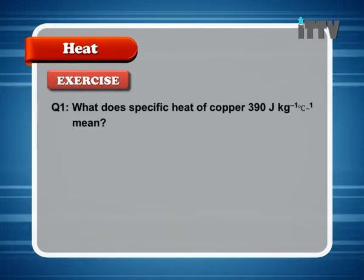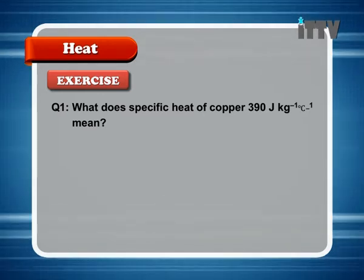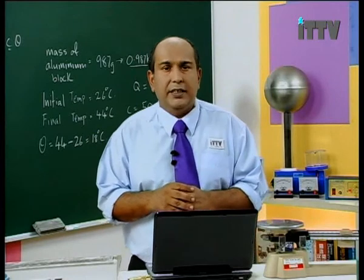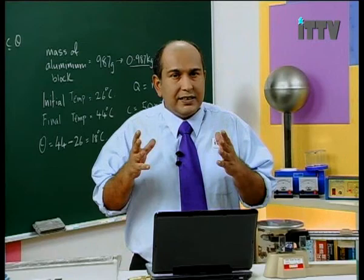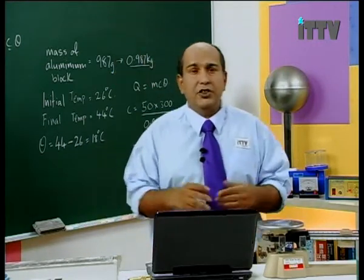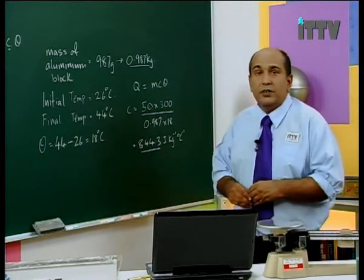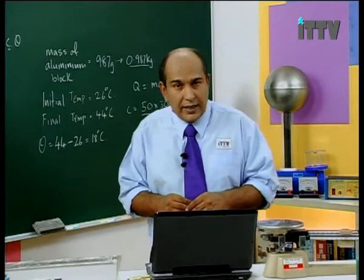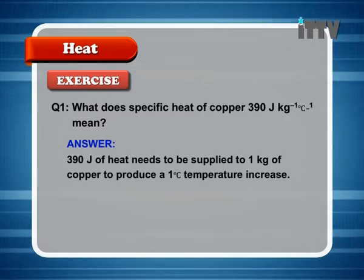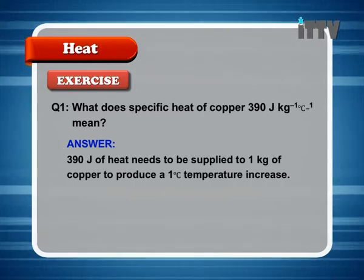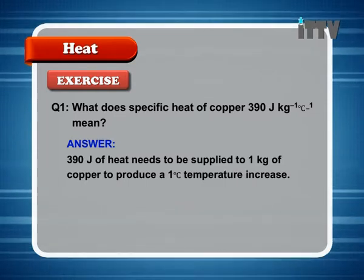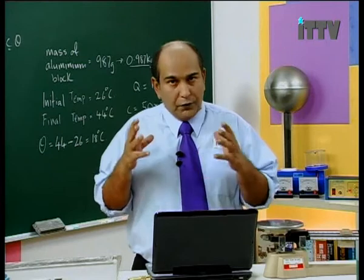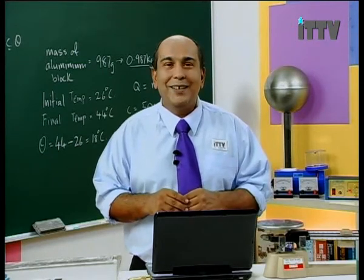Question: what does a specific heat of copper 390 J kg⁻¹ °C⁻¹ mean? What does it mean when we say the specific heat capacity of copper is 390? The answer: 390 Joules of heat needs to be supplied to 1 kilogram of copper to produce a 1 degree Celsius temperature increase. Specific heat capacity is the amount of heat absorbed so that the temperature of your substance, which is 1 kilogram, will rise by 1 degree Celsius.